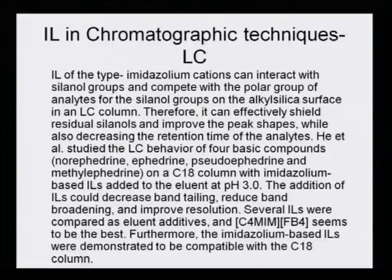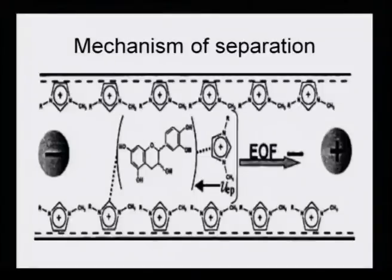The participation of ionic liquids in the LC separation process was possible because the polar group of the analyte competes with the imidazolium cation versus the silanol group of the C18 column. The imidazolium picks up the compound more effectively than the silanol group of the C18 column, and that is why the preferential separation makes it more effective. This is the mechanism of separation that actually takes place — the role of the imidazolium cation in effectively pulling out the compound.